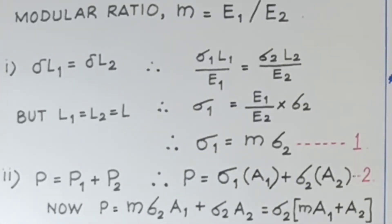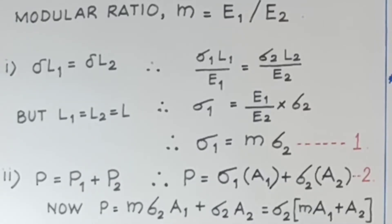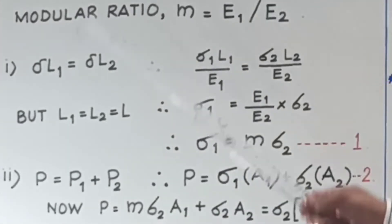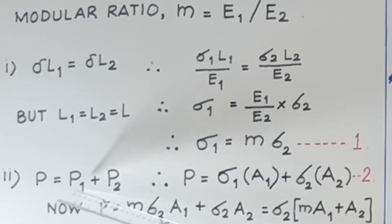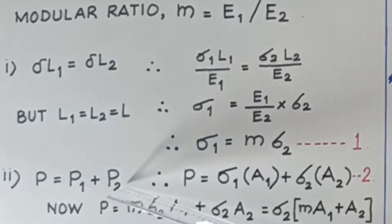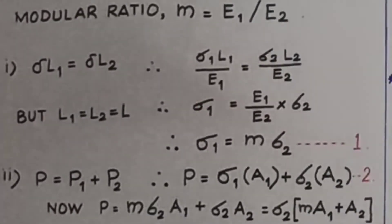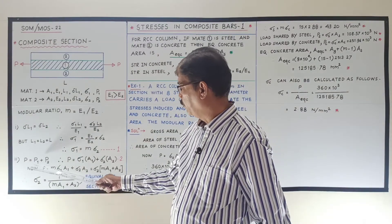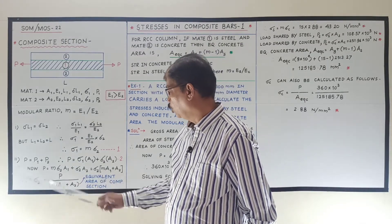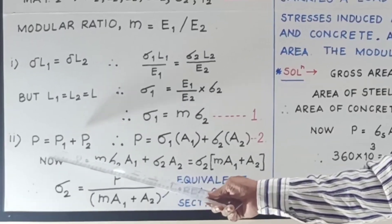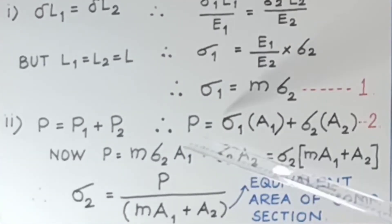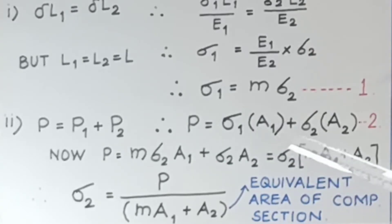The second important condition for composite section is that the total load on the composite section equals the sum of the loads carried by the different materials: P equals P1 plus P2. Since load equals stress times area, P1 equals sigma 1 times A1 and P2 equals sigma 2 times A2. Therefore P equals sigma 1 times A1 plus sigma 2 times A2.